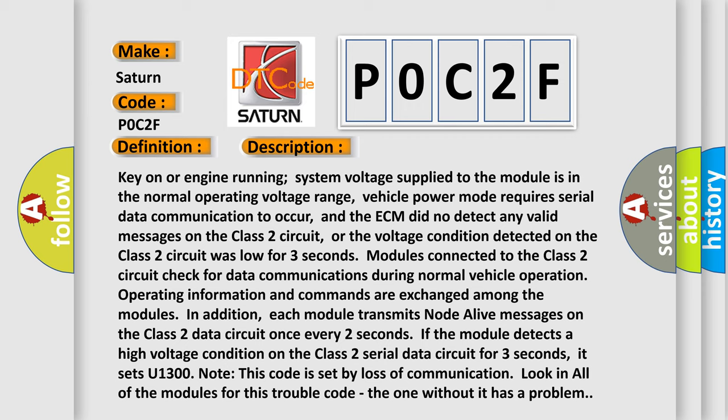Or the voltage condition detected on the Class 2 circuit was low for three seconds. Modules connected to the Class 2 circuit check for data communications during normal vehicle operation. Operating information and commands are exchanged among the modules.